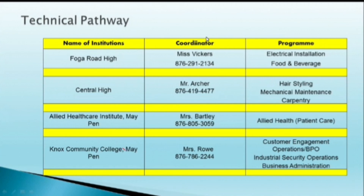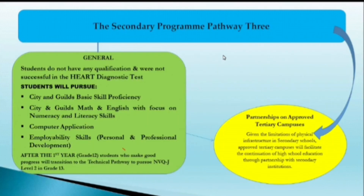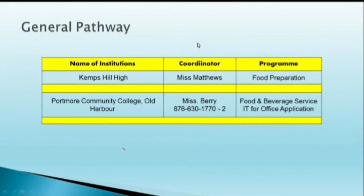You have to act now if your child just left school and doesn't have an opportunity to work or move on to any institution. For students who have no qualifications and were not successful in the Heart Diagnostic tests, there is still an opportunity through pathway three, where they can pursue City and Guilds basic skill proficiency, City and Guilds Maths and English with focus on numeracy and literacy skills, computer applications, and employability skills. Students who make good progress will then transition into the technical pathway to pursue NVQJ Level Two in grade thirteen. In Kemsal, they offer food preparation, and Portmore Community College in Old Harbour offers food and beverage service along with IT office applications.